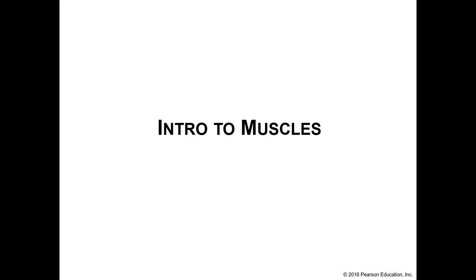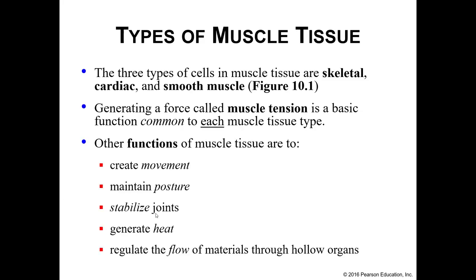In this recording we will discuss an introduction to muscles. You may remember from the histology recordings that there are three types of muscle tissue: skeletal muscle, cardiac muscle, and smooth muscle. These muscles have a few similarities and differences. They're all capable of generating force — we call this muscle tension.